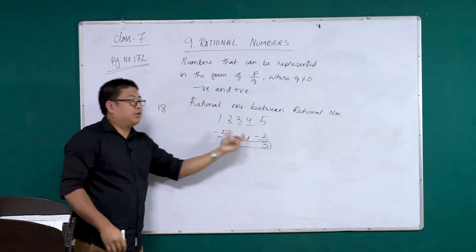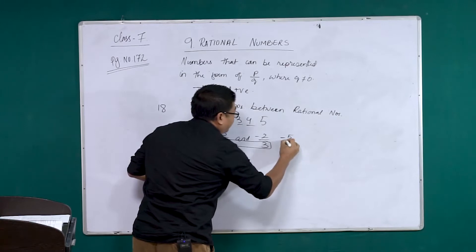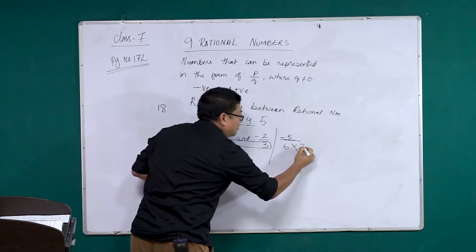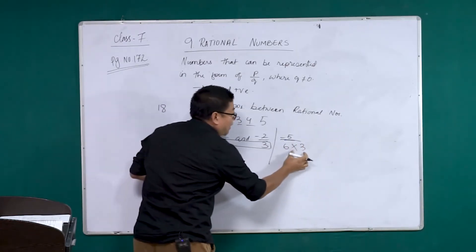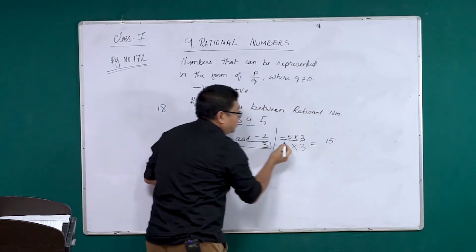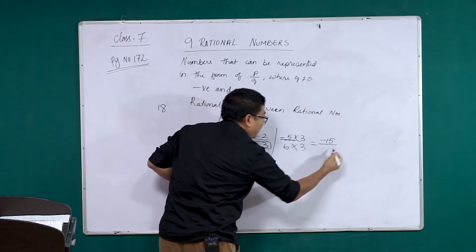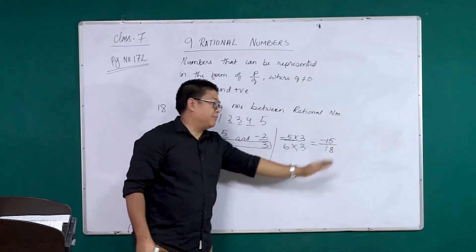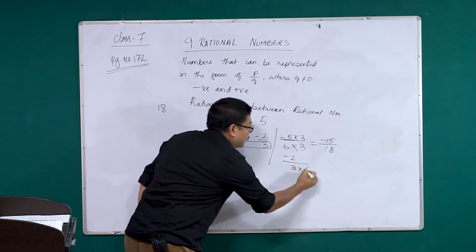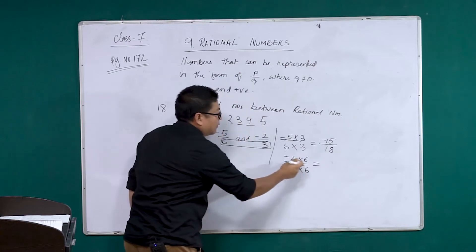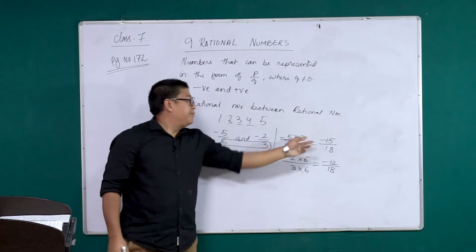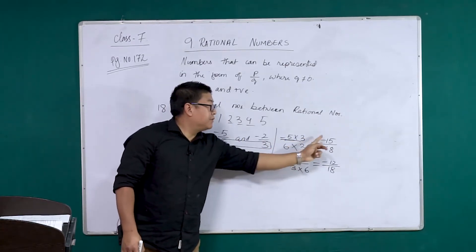So these two denominators will be changed to 18. For minus 5 by 6, to make this 18 we multiply by 3. So 6 into 3 is 18, and 5 into 3 is 15, giving minus 15 by 18. For minus 2 by 3, we multiply by 6: 3 into 6 is 18, and 2 into 6 is 12, giving minus 12 by 18.